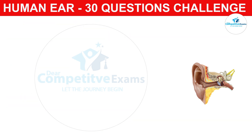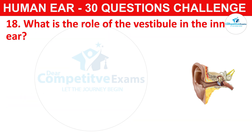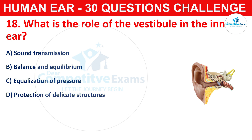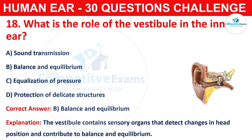Question number eighteen: what is the role of the vestibule in the inner ear? The options are sound transmission, balance and equilibrium, equalization of pressure, or protection of delicate structures. The correct answer is B, that is balance and equilibrium. The vestibule contains sensory organs that detect changes in head position and contribute to balance and equilibrium.